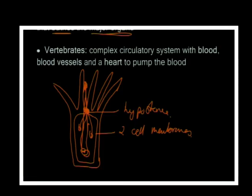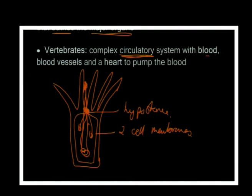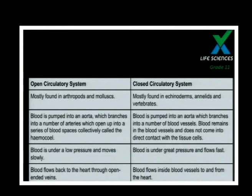Then we have vertebrates, which have a complex circulatory system. Vertebrates include birds, fish, reptiles, amphibians, and mammals. We have a circulatory system with blood, blood vessels, and of course the heart to pump everything around the body.